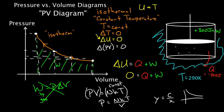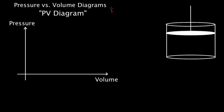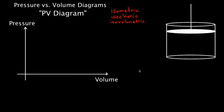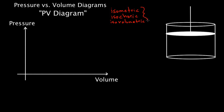That's the isothermal process — one of the four most common thermal processes; we've got two more. Let's talk about the isometric process. This is sometimes called isochoric, and also sometimes called isovolumetric — three names, but they all mean the same thing. Iso means constant, and volumetric, choric, and metric all refer to size or volume. This means constant volume. How do you ensure that? Just don't let the piston move — weld it shut if needed.